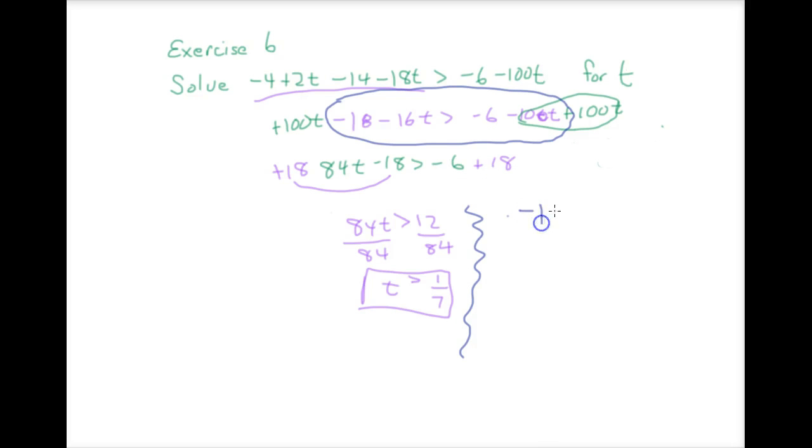So negative 18 minus 16t times negative one half, let's not let that bother us too much, is greater than, and then negative one half times, and I'm running out of screen room, minus 100t. Hope this fits. We're going to see. So the opposite, half of the opposite of negative 18 is 9. Half of the opposite of negative 16 is 8t.